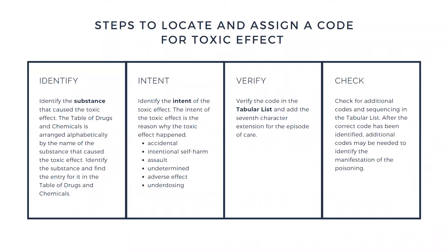Steps to locate and assign a code for toxic effect: Number one is to identify the toxic effect. The Table of Drugs and Chemicals is arranged alphabetically by the name of the substance that caused the toxic effect. So the first step is finding the code for the toxic effect and identifying that substance in the table — just like using the main index, you're looking for that main term.